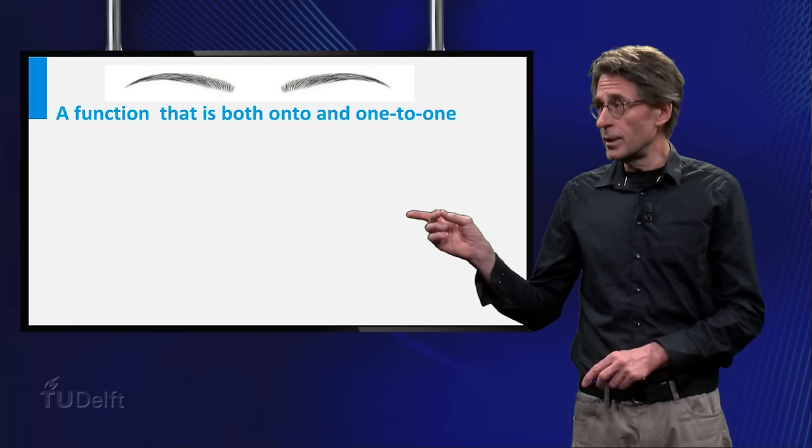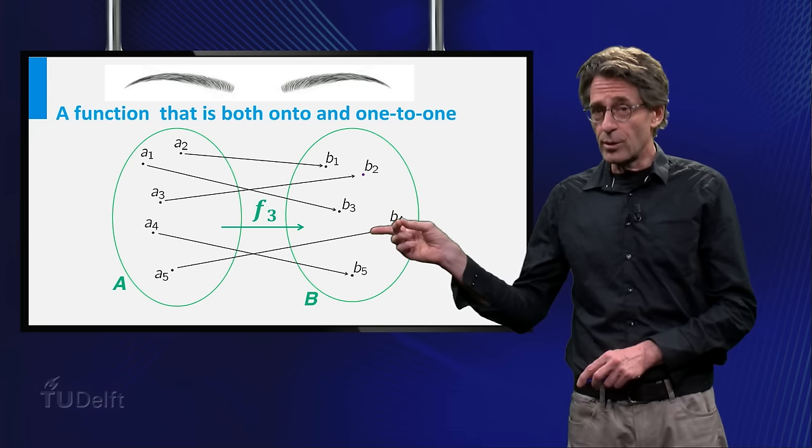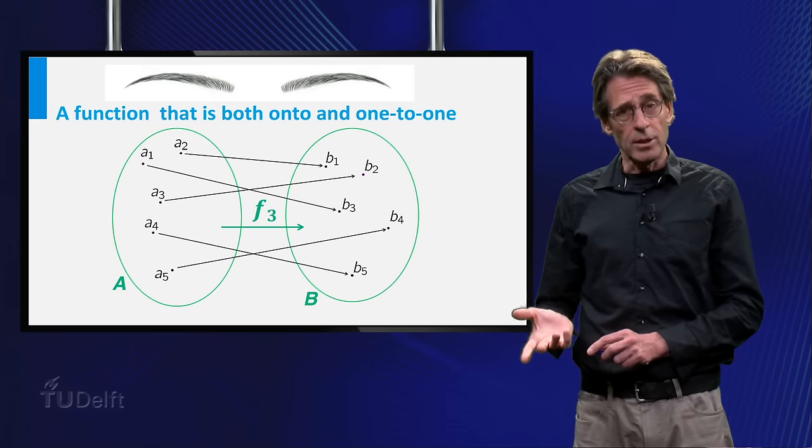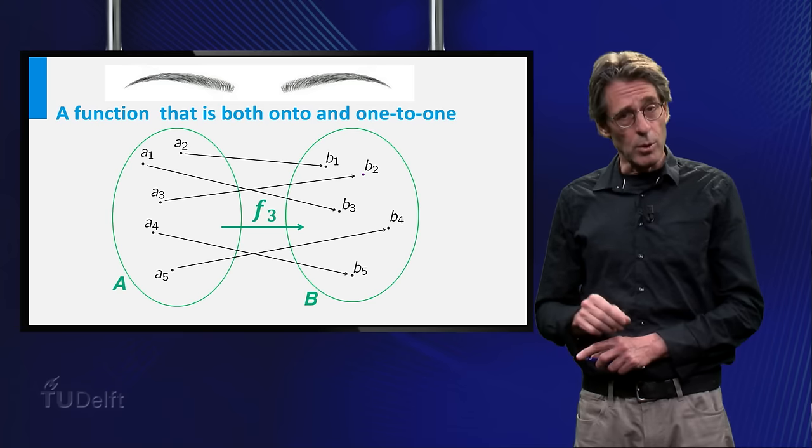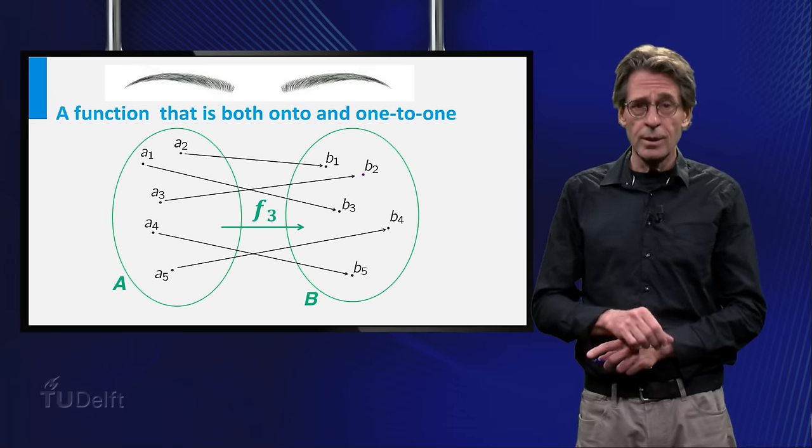Here is an example. For any point b in the codomain, there is exactly one arrow pointing to it. And exactly 1 means at most 1 and at least 1, so the function is both 1 to 1 and onto.